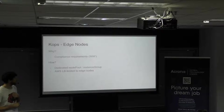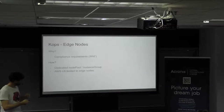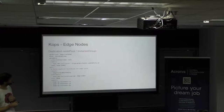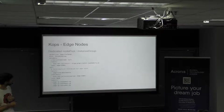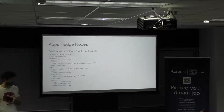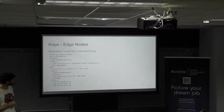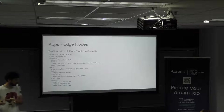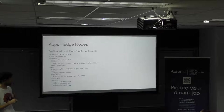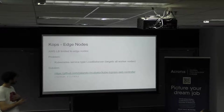The instance group definition in KOPS looks like this: I add a label that it belongs to this cluster and add a taint — this forces explicit toleration, meaning anything that runs on these nodes must tolerate the taint. That's how you schedule workloads onto specific nodes in Kubernetes. I also put a label on the nodes for the instance group, so my load balancer can be configured to only hit edge nodes and never touch application nodes directly.